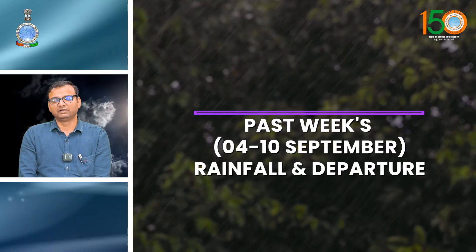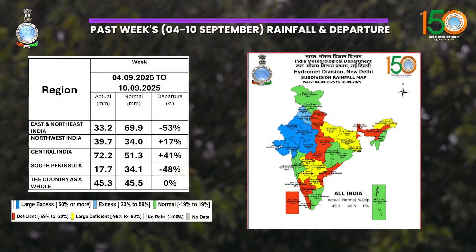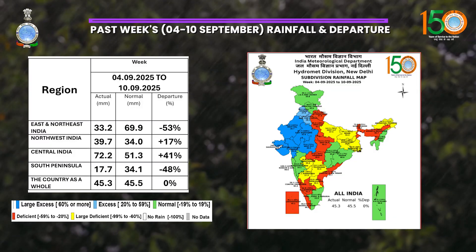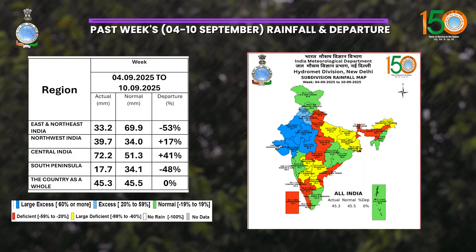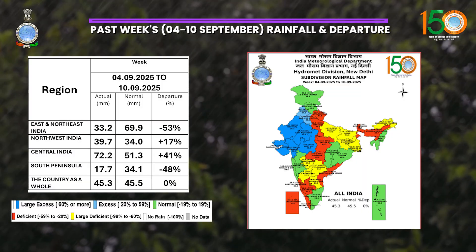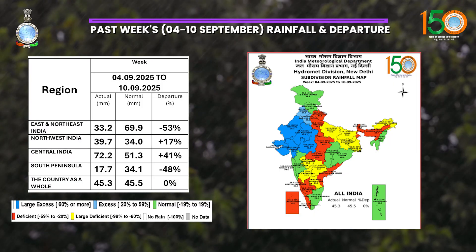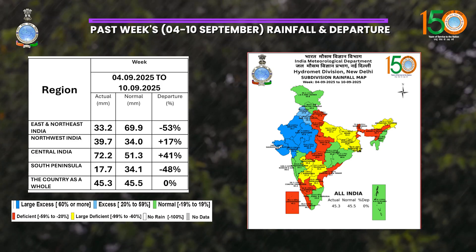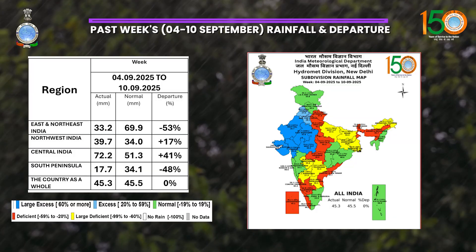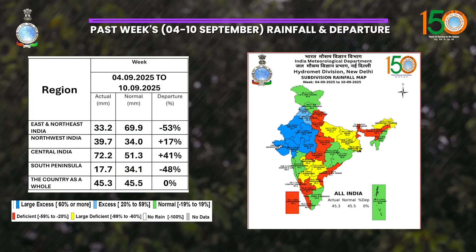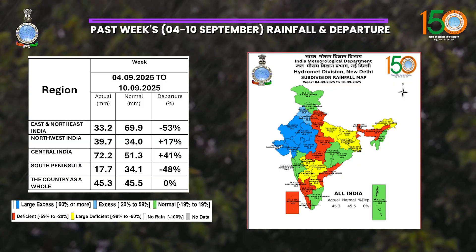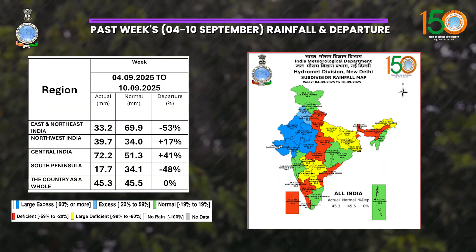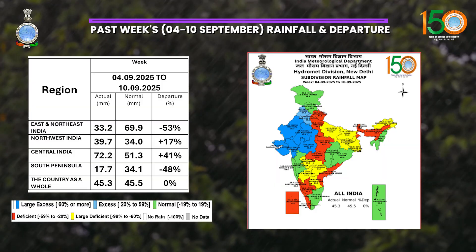Now if we look at the weekly rainfall distribution of the whole country, in this map you can see that Rajasthan, West MP and Gujarat state received large excess rainfall during this week. Punjab and Haryana received excess rainfall during this week. And in the table you can see that because of the rainfall activity associated with the deep depression and passing western disturbances, central India and northwest India received plus 41% and plus 70% above normal rainfall from the long period average. East and northeast India and parts of south peninsular India received below normal rainfall during this past week.